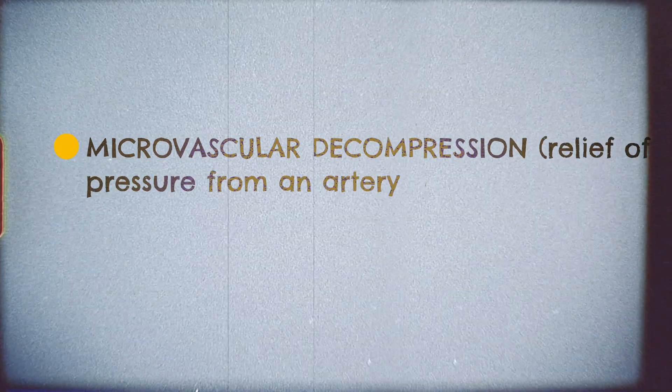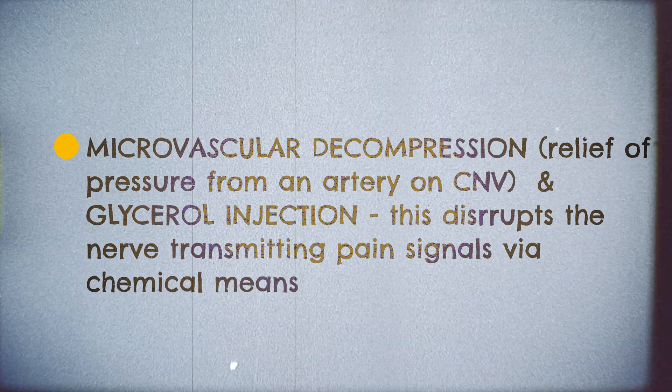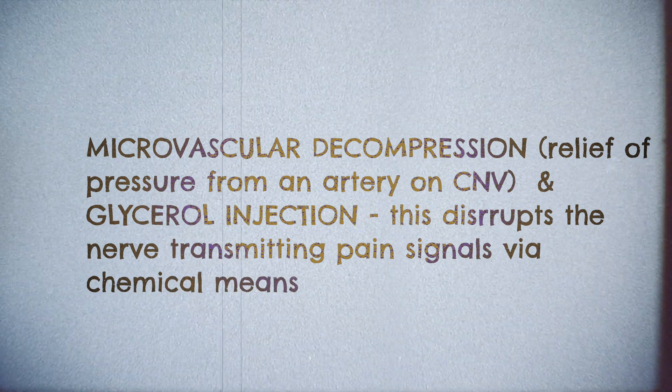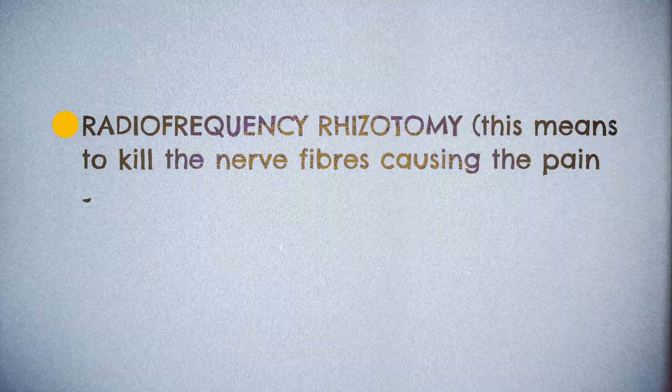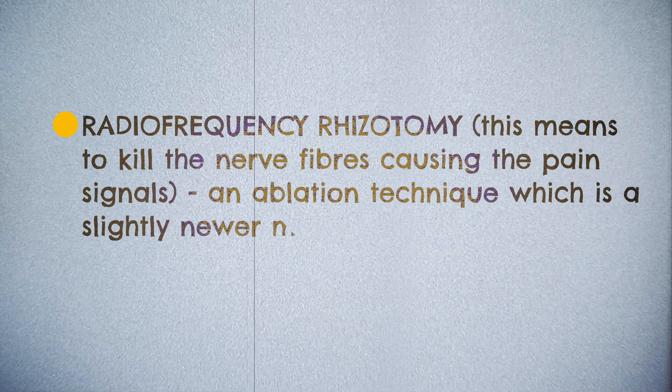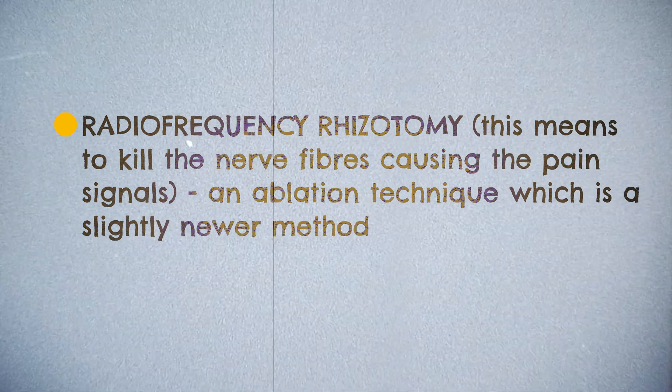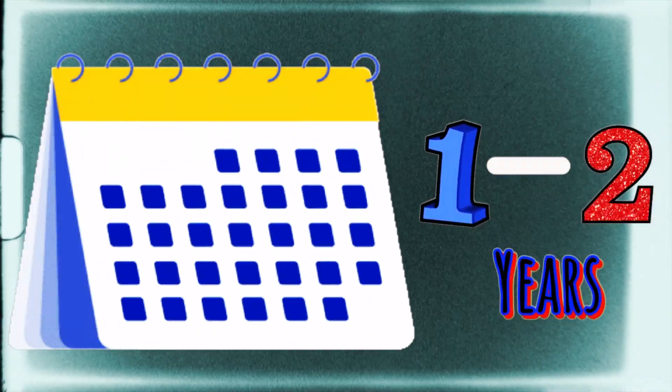Microvascular decompression involves exposing the trigeminal nerve root and placing a cushion between the nerve and the blood vessel that may be compressing the nerve. Rhizotomy involves creating selective nerve damage that disrupts the body's ability to send the pain signals from the nerve to the brain. The pain suppression lasts one to two years and can be performed multiple times.